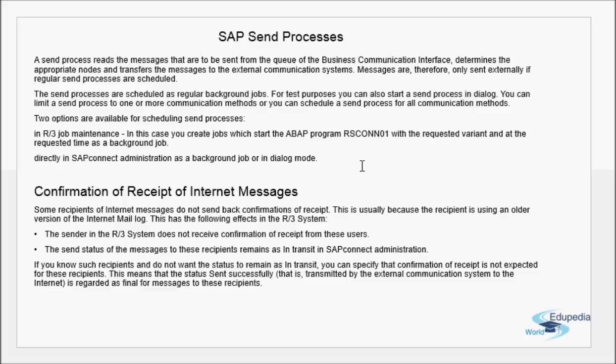You can have different jobs for different communication types. A fax job picks up entries to be sent through the fax node; a mail job picks up all entries to be dispatched as mails. Alternatively, you can schedule a single job for both purposes — in the variant of the RSCONN01 program you configure whether it's used only for fax, only for mail, or for both.